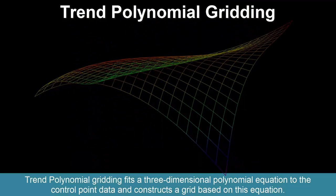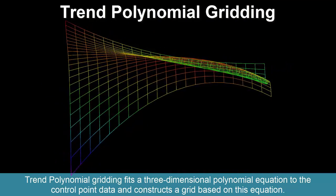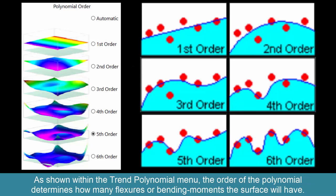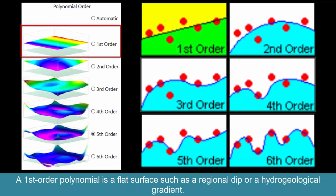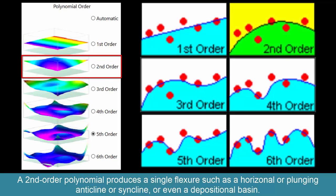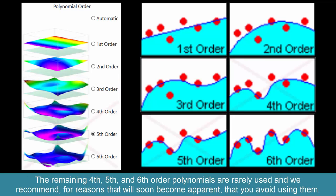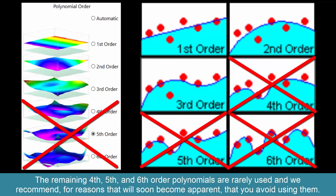Trend polynomial gridding fits a three-dimensional polynomial equation to the control point data and constructs a grid based on this equation. The order of the polynomial determines how many flexures or bending moments the surface will have. A first order polynomial is a flat surface such as a regional dip or hydrogeological gradient. A second order polynomial produces a single flexure such as a horizontal or plunging anticline or syncline, or even a depositional basin. A third order polynomial has two bending moments that might be used to model a complex structure such as an anticline-syncline system. The fourth, fifth, and sixth order polynomials are rarely used, and we recommend you avoid using them.